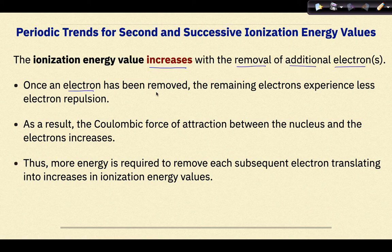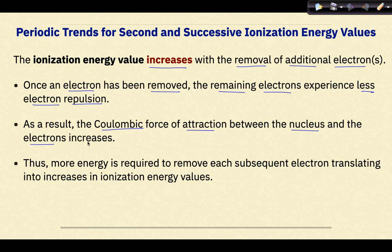The ionization energy value increases with the removal of additional electrons. Once an electron has been removed, the remaining electrons experience less electron repulsion. As a result, the Coulombic force of attraction between the nucleus and the electrons increases. Thus, more energy is required to remove each subsequent electron, translating into increases in ionization energy values.